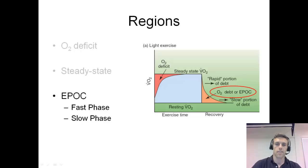EPOC is excess post-exercise oxygen consumption. If we break that down, we know what oxygen consumption is. The P is post-exercise, so it's after we exercise. The excess just means that we're consuming more oxygen than you would expect now that we're at rest.